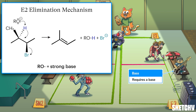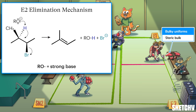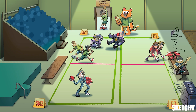This fellow is slapping out pump-up jams on his bass guitar to remind you that the E2 reaction, like all the eliminations we'll discuss, requires the presence of a base. But the base used in an E2 must be strong — which is why the amp in the E2 area is so huge. A strong base is necessary because it has to yank a proton from a substrate that hasn't already lost its leaving group. Also like all eliminations, E2 reactions are promoted by steric bulk at the reacting substrate, which is why we see a pile of bulky uniforms next to the elimination court.